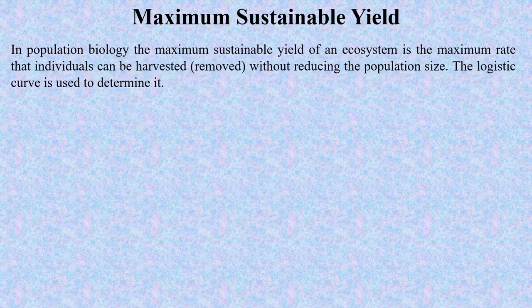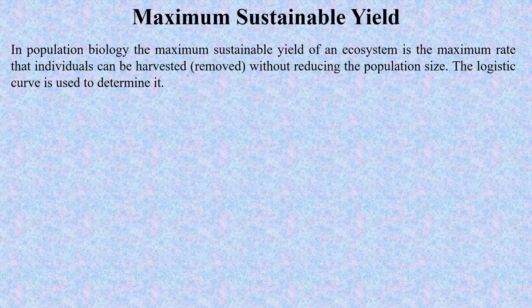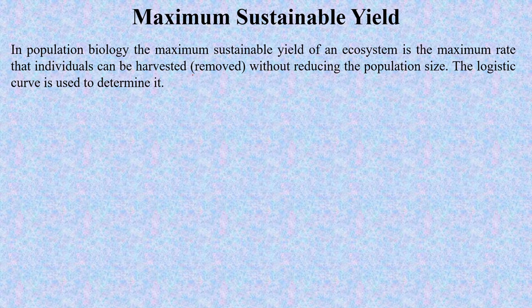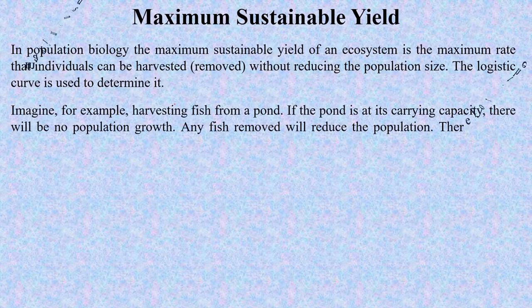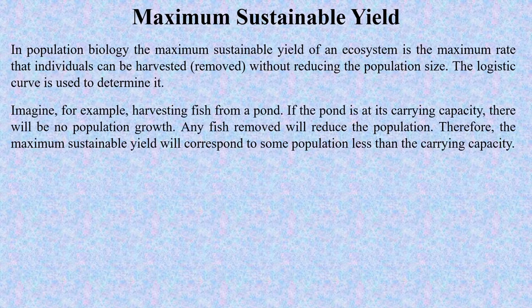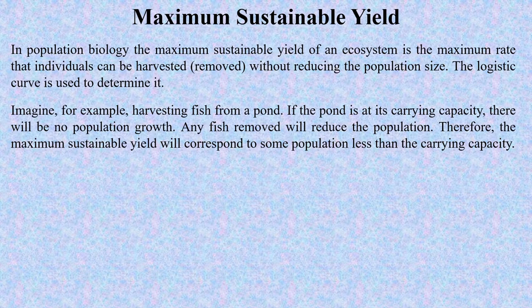So what is maximum sustainable yield? In population biology, the maximum sustainable yield of an ecosystem is the maximum rate that individuals can be harvested or removed without reducing the population size. The logistic curve is used to determine it. Imagine, for example, harvesting fish from a pond. If the pond is at its carrying capacity, there will be no population growth, and any fish removed will reduce the population.